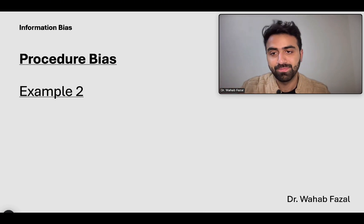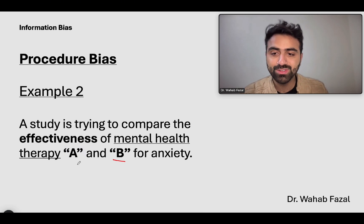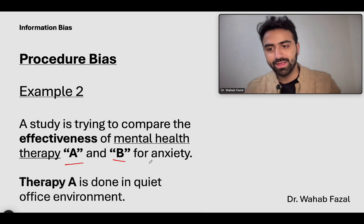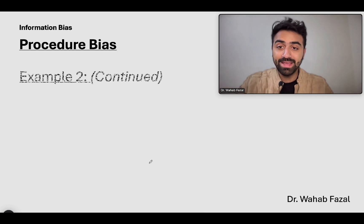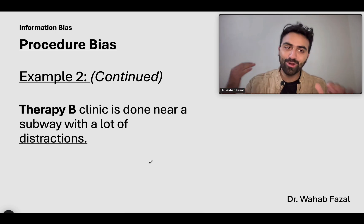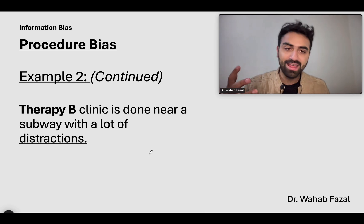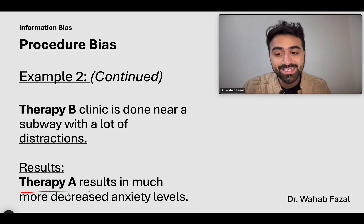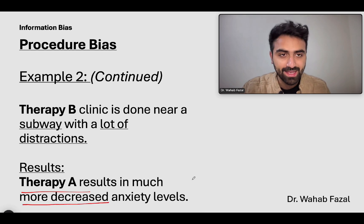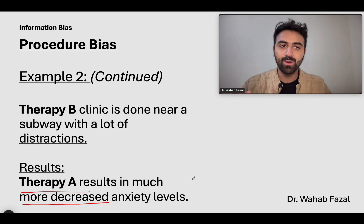Second example to understand procedure bias: a study compares the effectiveness of mental health therapy A and therapy B for anxiety. Therapy A is done in a very quiet, calm, peaceful office environment, while therapy B is done near a subway with a lot of distractions and noise. Obviously patients will be much calmer in therapy A's environment, and the results will show therapy A producing much greater decreases in anxiety — that's the inherent problem with the procedure of the study itself.